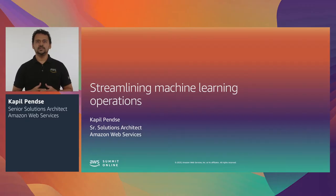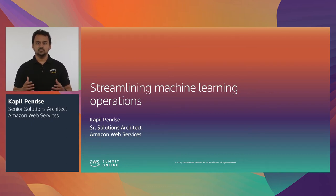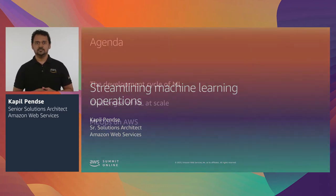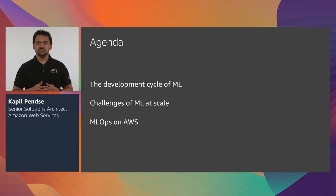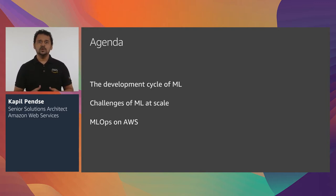Hi, my name is Kapil Painse. I'm a solutions architect here at Amazon Web Services. Today, I'm here to talk about ML Ops, that is, the art of running machine learning operations at scale. We will start by unpacking the typical development cycle of machine learning, and then we will talk about the challenges of operating machine learning at scale. We will close out this session with a deep dive discussion about how you can build out an operational framework for ML on AWS in a way that overcomes those challenges.